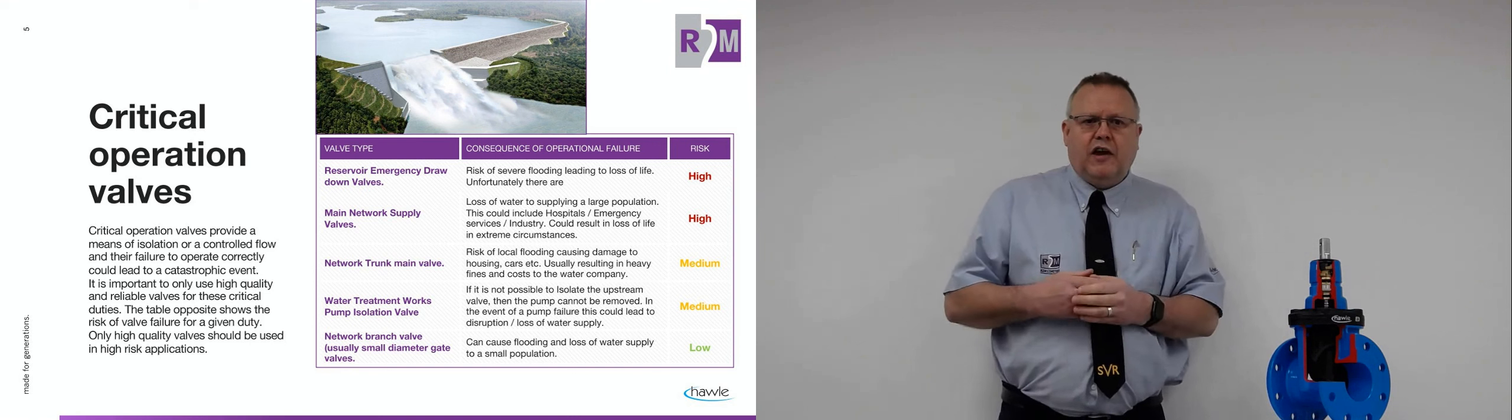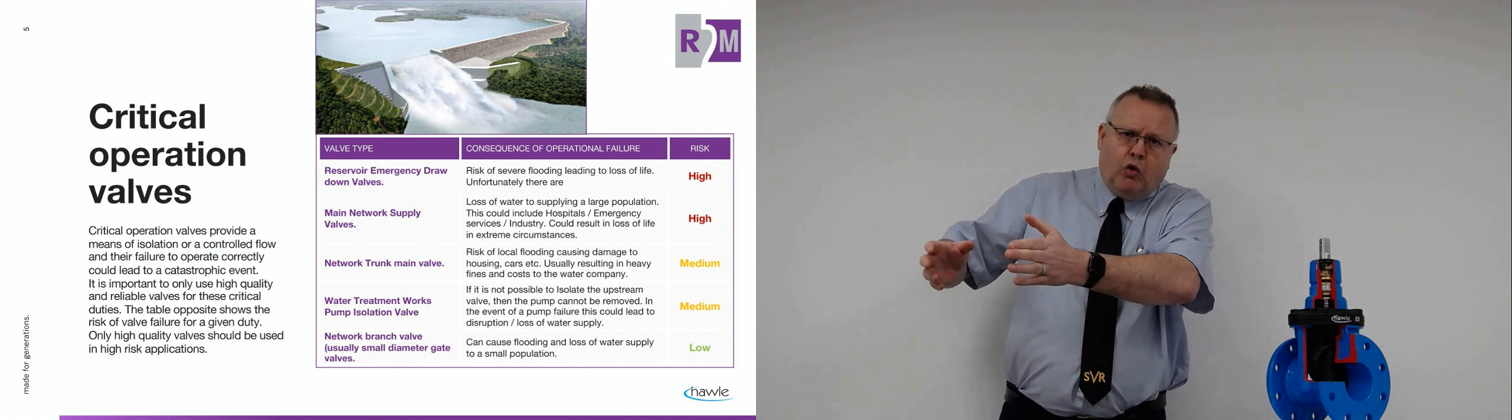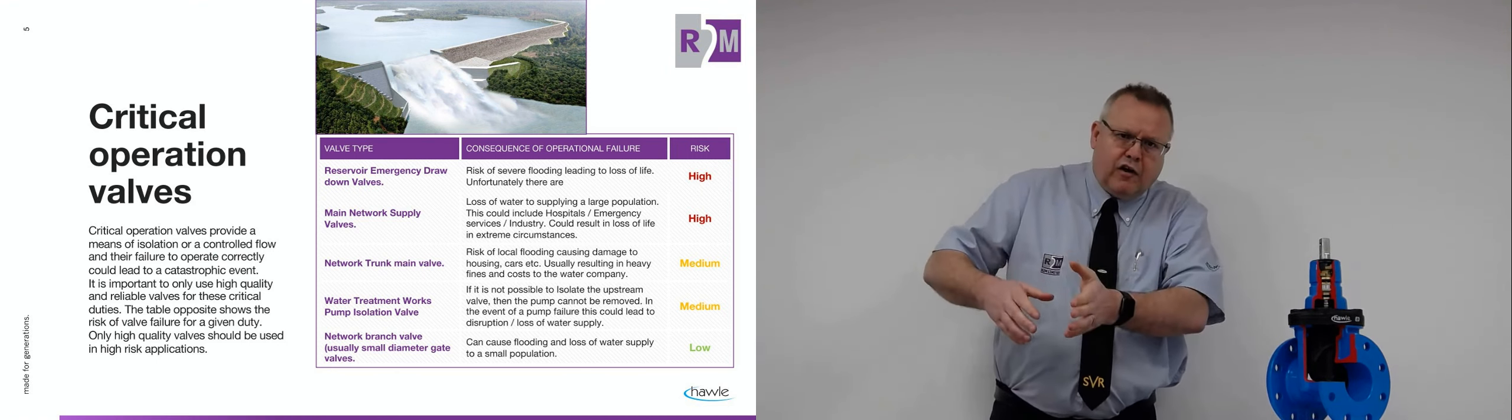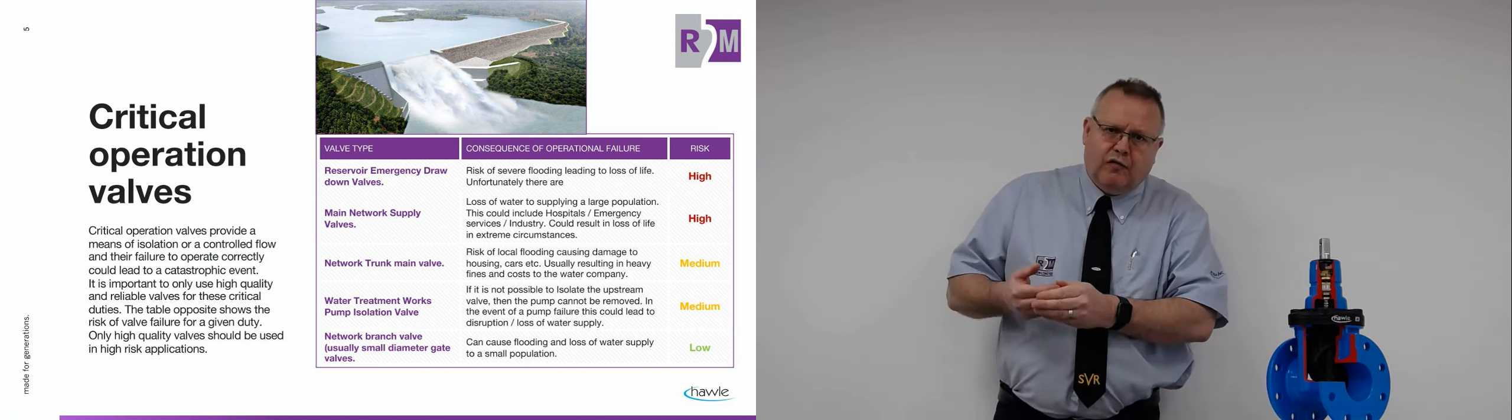The other thing is as well, if you think of an industrial process, if you've got an industry where they've got a process that's critical, they've got water cooling. Again, if they can't get the water into the factory, then they will have a big problem. This is a critical operation valve.